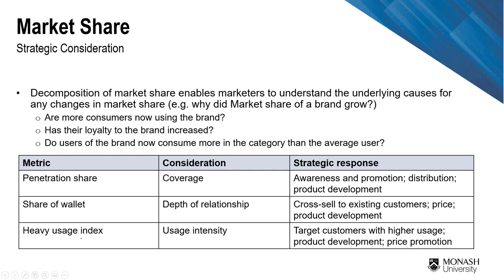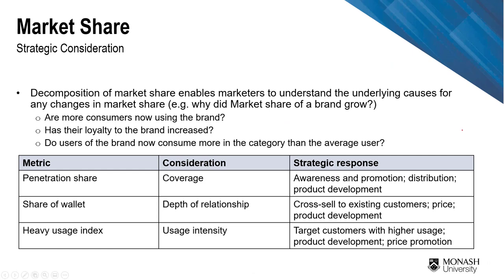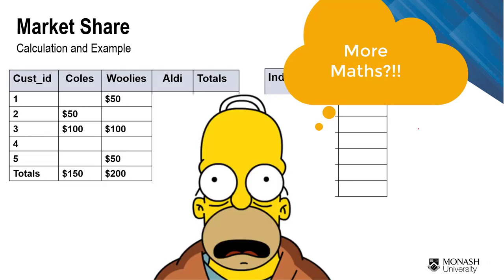Lastly, to increase the heavy usage index, you can target customers with higher usage — those who intensely use your product. You can also increase product variety, offer price promotions to enable stockpiling, or provide educational content encouraging customers to use more of the product.